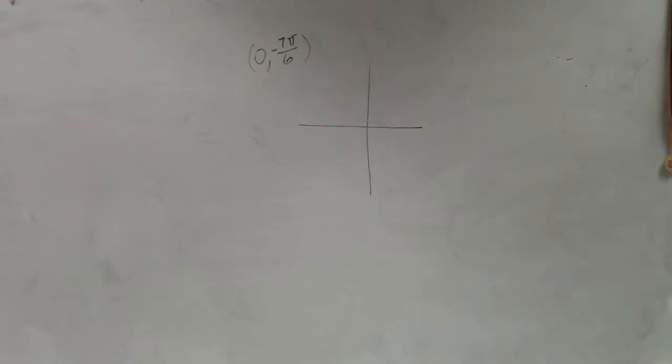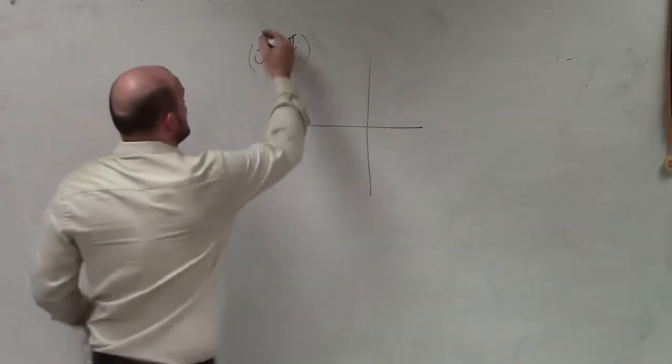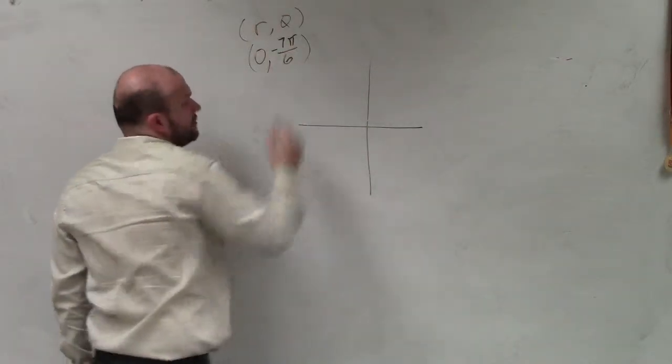They're asking us to find, plot this point, and then to find the polar representation. Now, we look at this in polar form, and we remember that polar form is r theta, right?